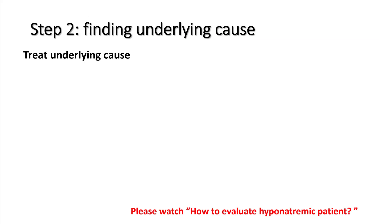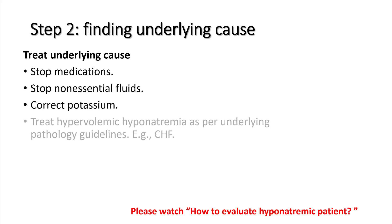Step two is finding the underlying cause. Please check out how to evaluate a hyponatremic patient in my previous lecture — links are below. Make sure you go through the entire medication list and stop any offending medication. Stop any non-essential fluids. Correct potassium if you're dealing with hypokalemia. If you have hypervolemic hyponatremia, treat per heart failure or cirrhosis guidelines.